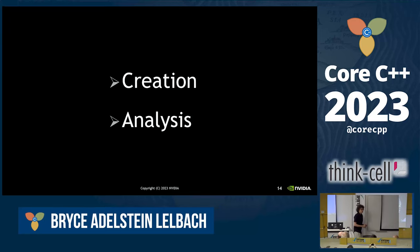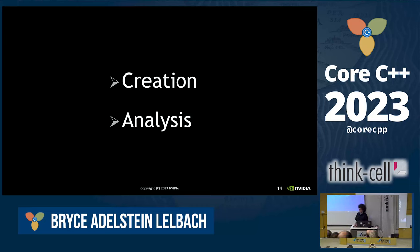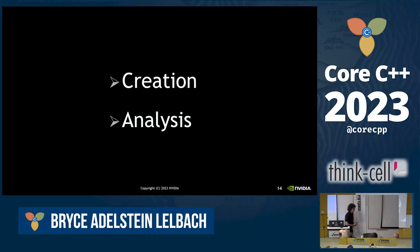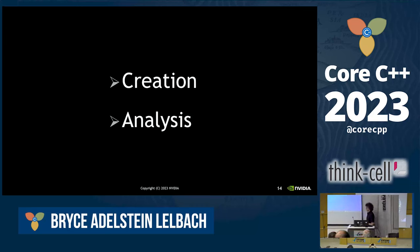We're going to go through one example of something I've been working on building, which is a tool called CY — a little command line tool intended to explain to you why your C++ code failed to compile. It actually works for essentially any type of code and any type of diagnostic now, and we'll see why in a few minutes. Here is the diagnostic.